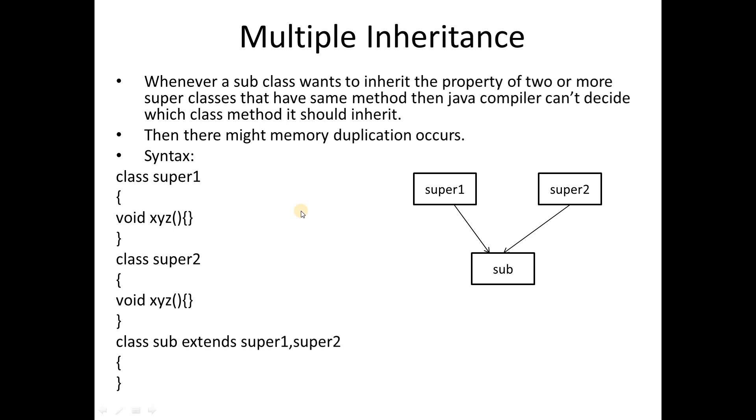We see there are four inheritance types: first is simple, second is multilevel, third is hierarchical, and last is multiple inheritance. Multiple inheritance is not supported by Java, and we've seen the reason behind that in this video. For multiple inheritance which is not supported by Java, we have another alternative which is interface.